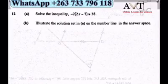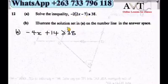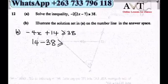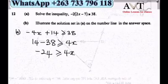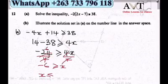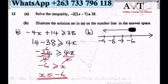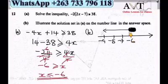Question 12: Solve the inequality. Expanding: −2×3 = −6 and −2×(−7) = +14. Rearranging gives 14 − 38 ≥ 4x, so −24 ≥ 4x. Dividing by 4: x ≤ −6. The final answer is x ≤ −6, and we represent this on a number line with a closed circle at −6.